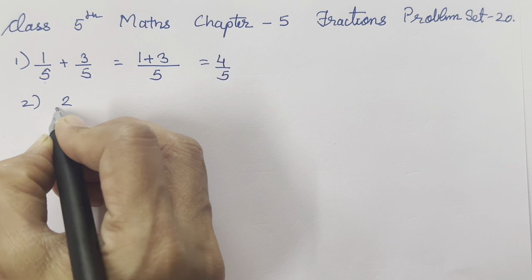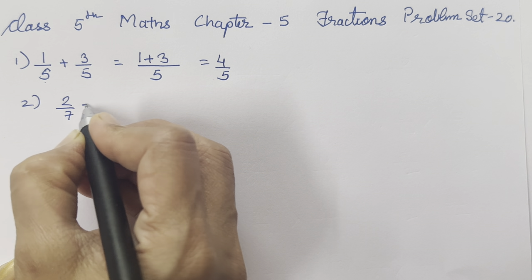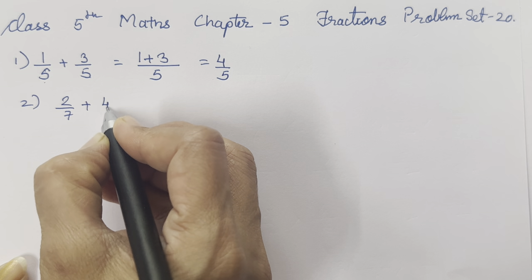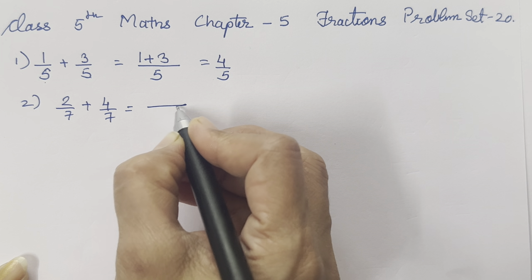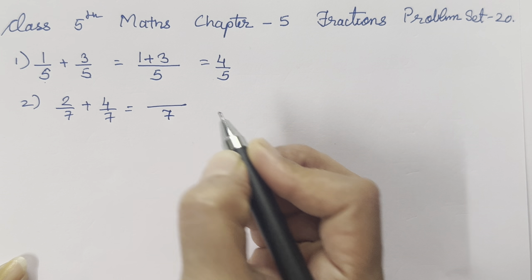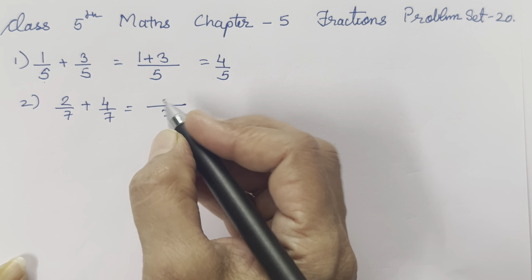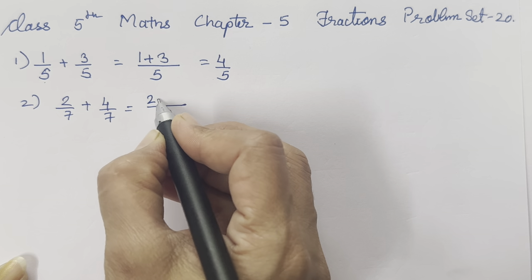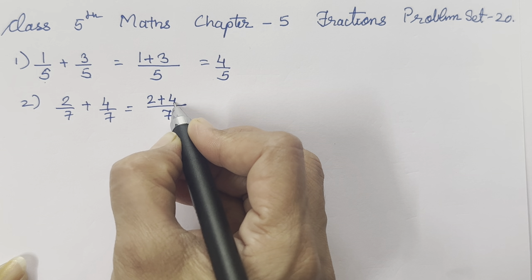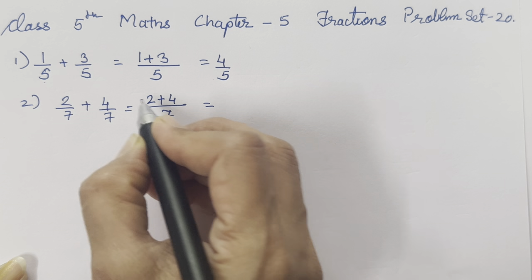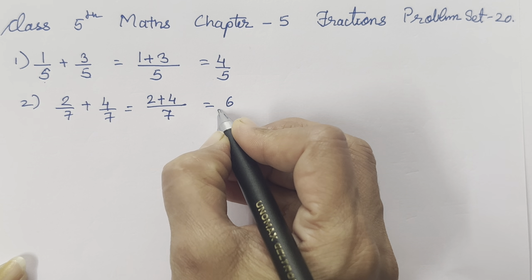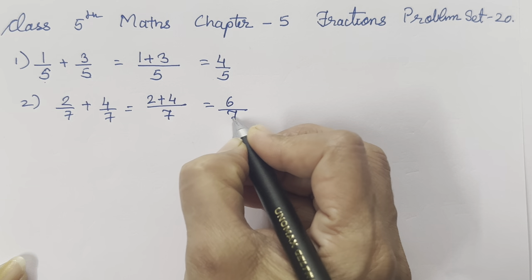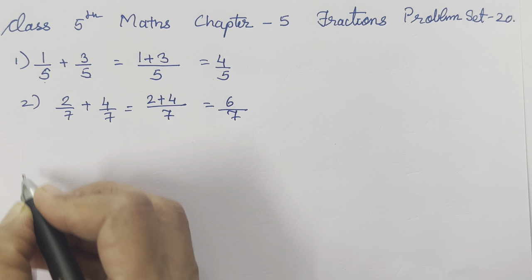Next is 2 upon 7 plus 4 upon 7. The denominators are equal — as I said, those are like fractions. So 2 plus 4 is going to be 6 upon 7.